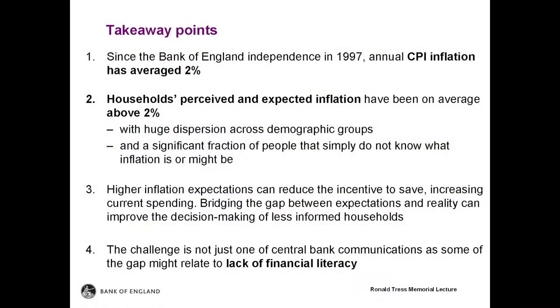I would like to emphasize four points or takeaways. First, since the Bank of England's independence in 1997, consumer price inflation has averaged 2% per year — it was actually exactly 2% in May 2019, the latest reading. Second, households' perceptions and expectations of inflation have averaged well above our target, with huge dispersion across different demographic groups. Moreover, a significant fraction of people today simply do not know what inflation is or might be.